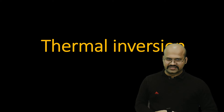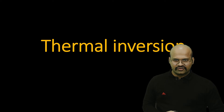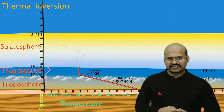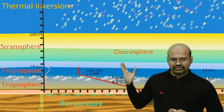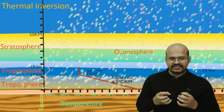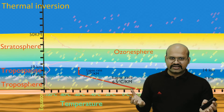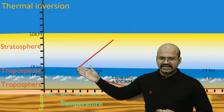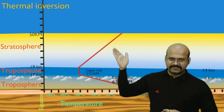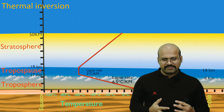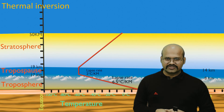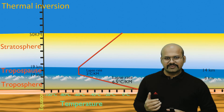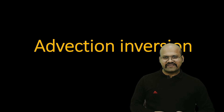The next type is thermal inversion, which occurs in the stratosphere. Ozone in the stratosphere absorbs UV radiation from the sun and gets heated. This heat warms the surrounding air, so as we go up through the tropopause and into the stratosphere, temperature slowly increases. This is a permanent inversion in our atmosphere caused by absorption of radiation by the ozone layer, and is therefore called thermal inversion.